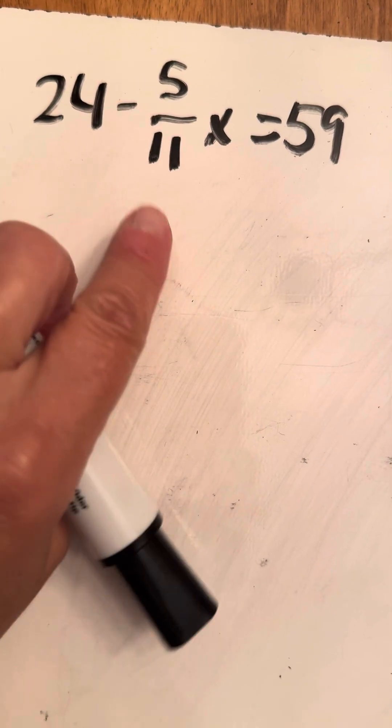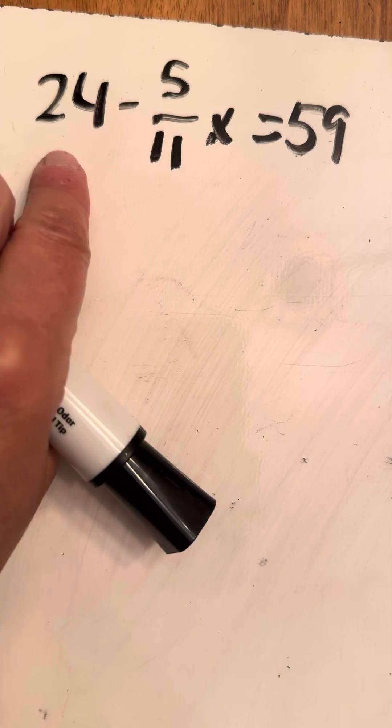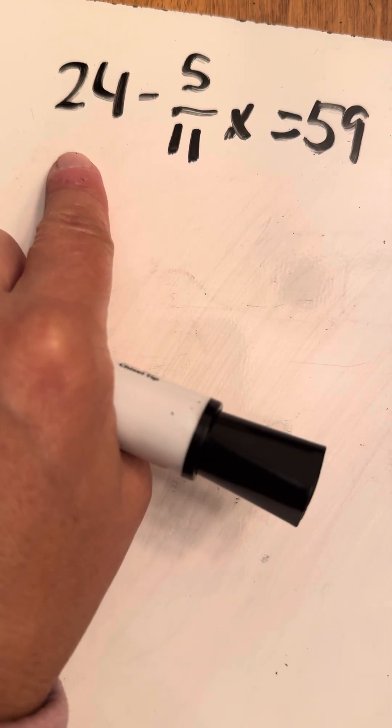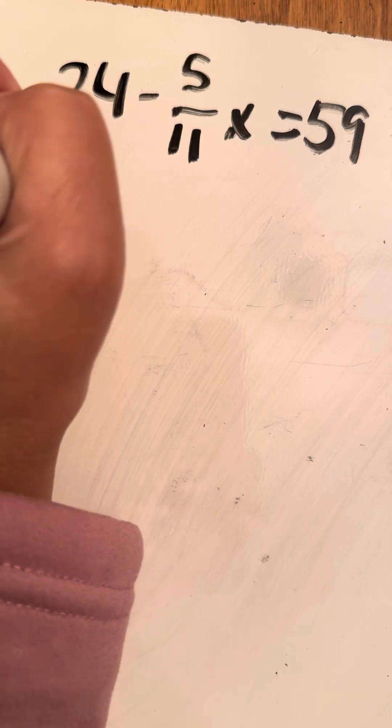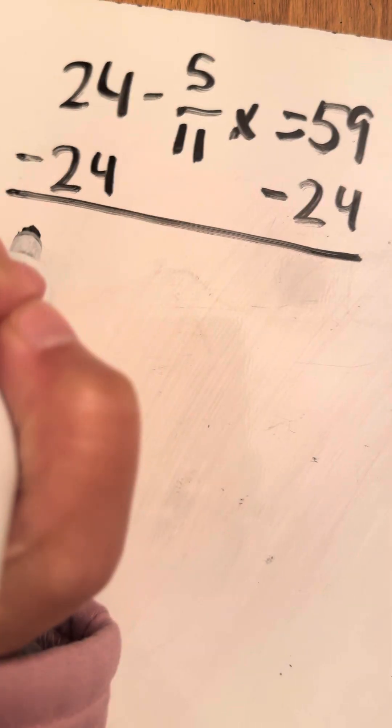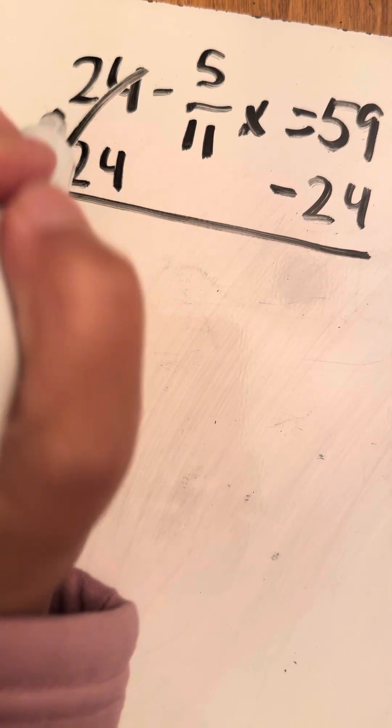So what we're going to do is we always want to get rid of the item that's not next to the x, which in this case is that 24. So we want to do the opposite operation. Now it is a positive 24, so I'm going to take away 24. Starting there, now that's your first step. So that will go away.